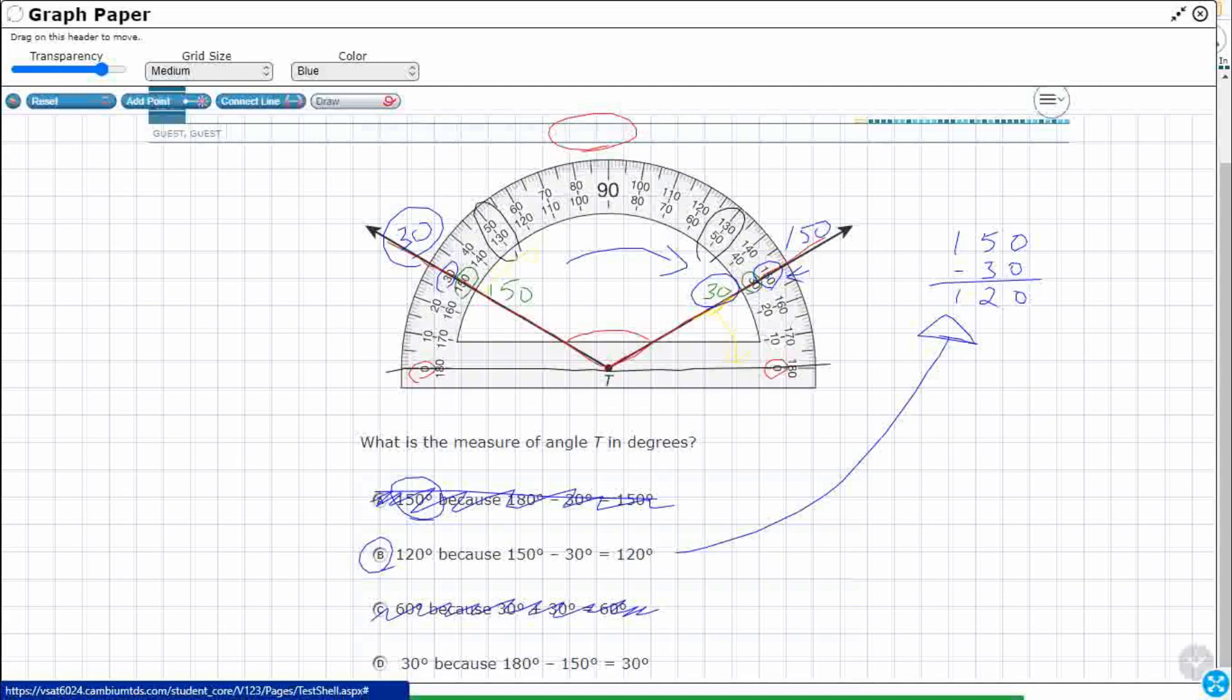And then 30, because, okay, here's 30 degrees. If I wanted to make a line right here, see that line right there, that's 30, because one of my rays is on zero, the other one's on 30. But this is 120. So, my answer here is going to be B.